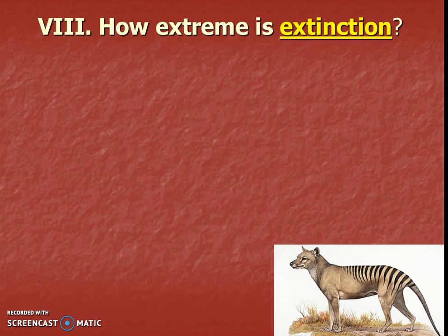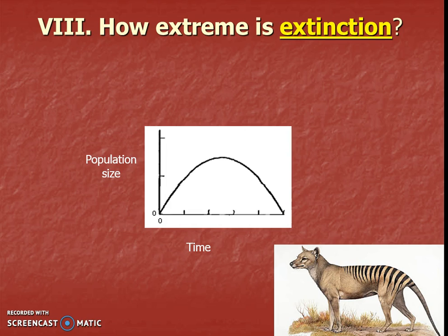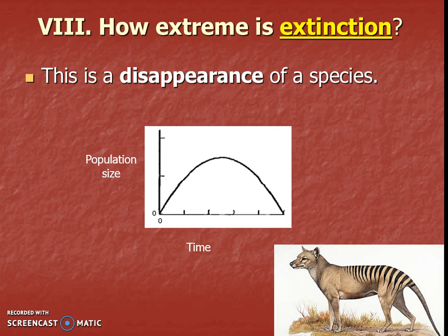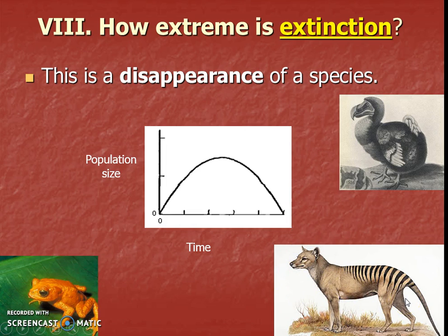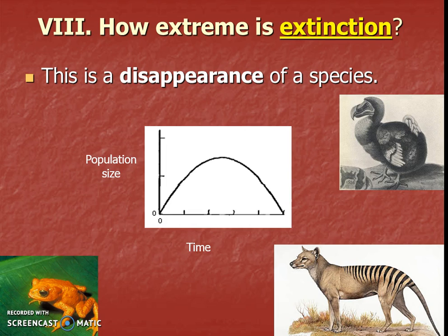So how extreme is extinction? We've talked about a maximum number of organisms and sometimes there's a decline. Extinction is if that decline went way too far. This has happened — we have examples of species completely disappearing off the face of this planet. The dodo bird was hunted too much. The Tasmanian tiger was hunted for its beautiful fur. We've also had problems with pollution causing extinction, like the golden toad in the rainforest. Extinction happens but it's the very extreme amount, and we as scientists try to track this so we can catch it in advance.